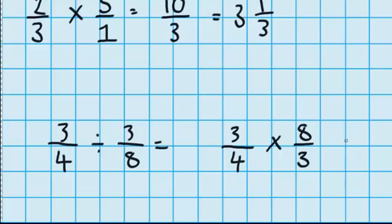I multiply my numerators together. Three times eight is 24. And I'm going to multiply my denominators together. Four times three is 12. And I know that 24 over 12 is the same as two whole trips.